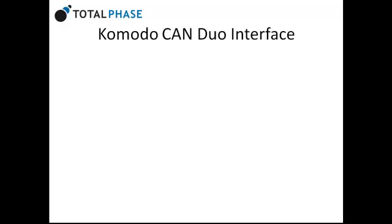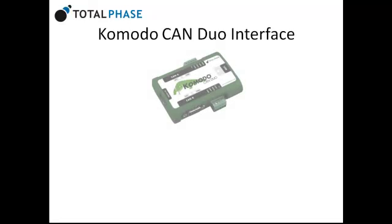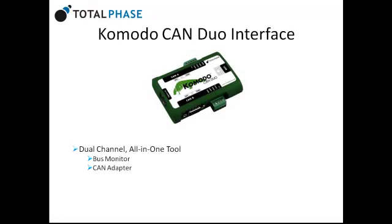The Komodo CAN-DUO interface is a powerful two-channel USB-to-CAN adapter. The Komodo is an all-in-one tool, capable of non-intrusively monitoring the CAN bus, as well as actively transmitting CAN data.